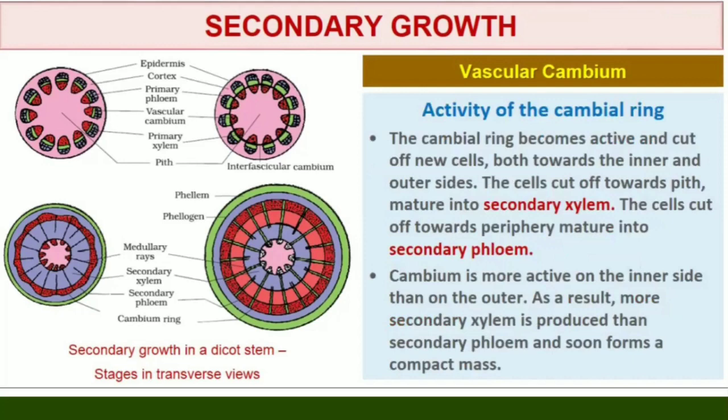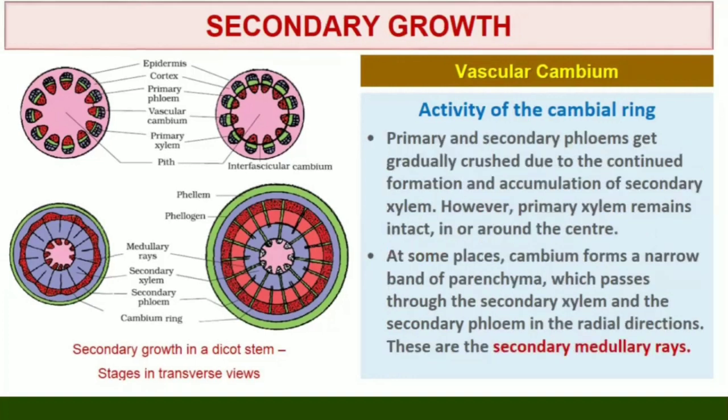Activity of the Cambium Ring. The cambium ring becomes active and begins to cut off new cells both towards the inner and the outer sides. The cells cut off towards pith mature into secondary xylem, and the cells cut off towards periphery mature into secondary phloem. The cambium is generally more active on the inner side, so the amount of secondary xylem produced is more than secondary phloem and soon forms a compact mass. The primary and secondary phloems get gradually crushed due to continued formation and accumulation of secondary xylem. The primary xylem however remains more or less intact in or around the center. At some places, the cambium forms a narrow band of parenchyma which passes through the secondary xylem and secondary phloem in the radial direction. These are the secondary medullary rays.